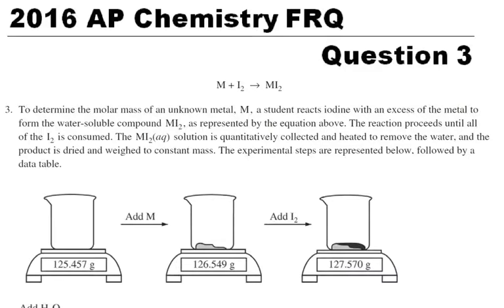Now in question 3 of the 2016 AP Chemistry FRQ, we're doing a little lab here. What's happening is, to determine the molar mass of an unknown metal M, a student reacts iodine with an excess of the metal to form the water-soluble compound MI2 as represented by the equation above. So we have M plus I2 turns into MI2. That's important - we see it's a one-to-one ratio.